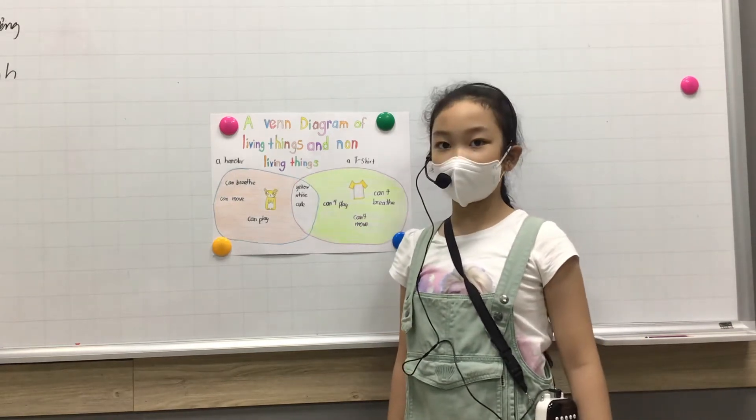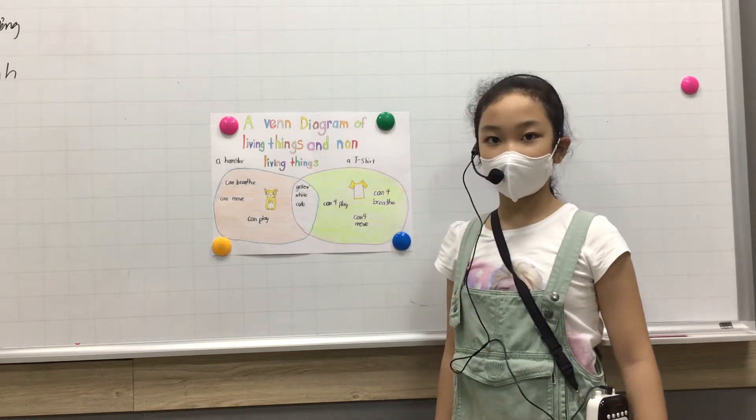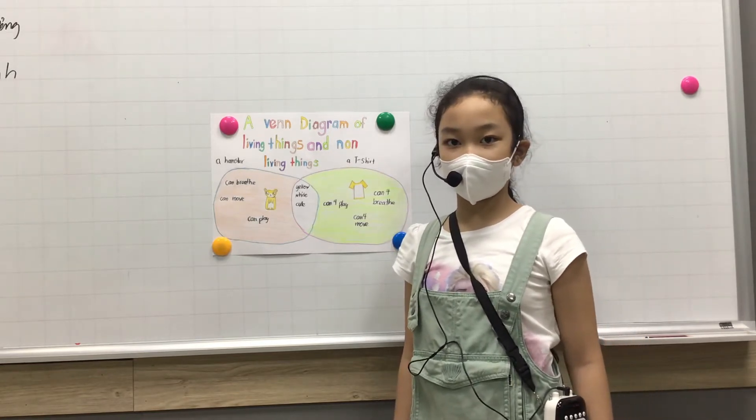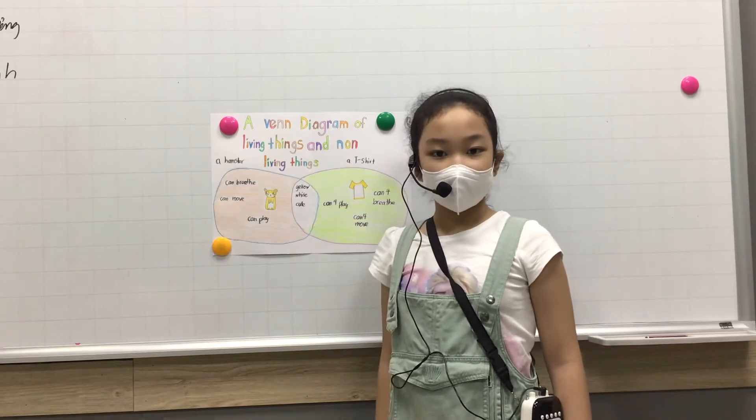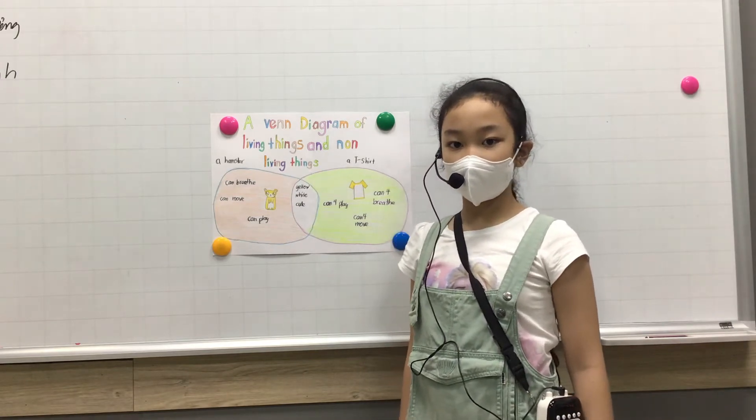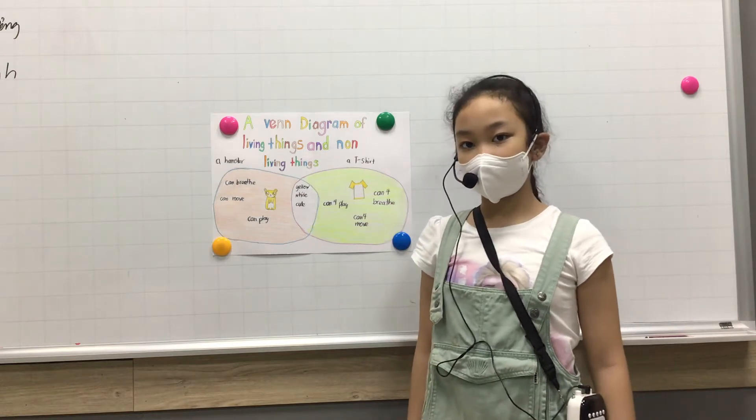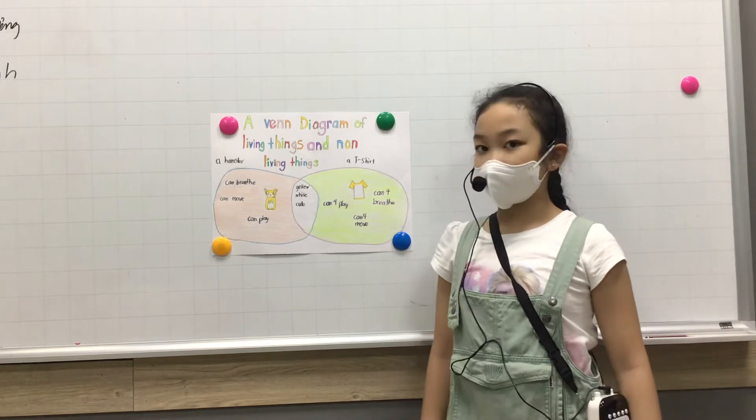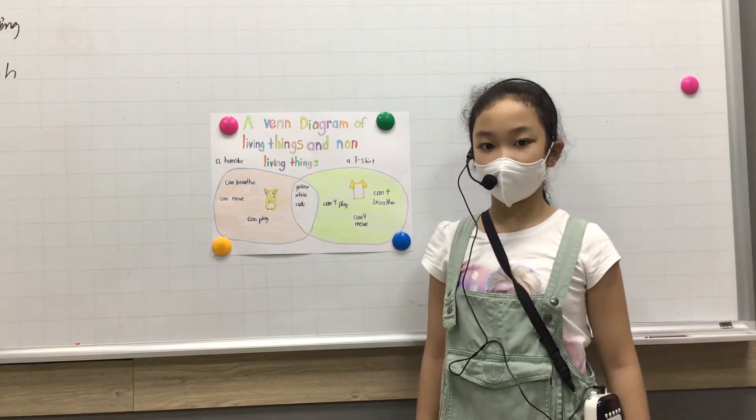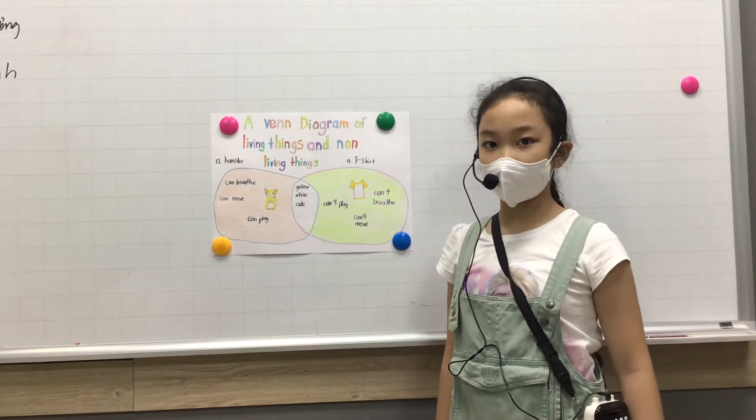The hamster can breathe, but the t-shirt cannot. The hamster can move by itself. The t-shirt can move if we move it. The hamster can play, but the t-shirt cannot.